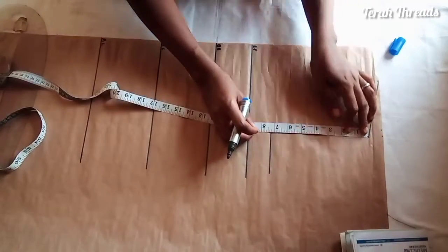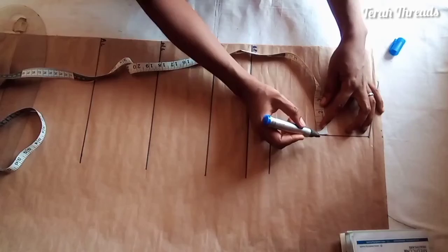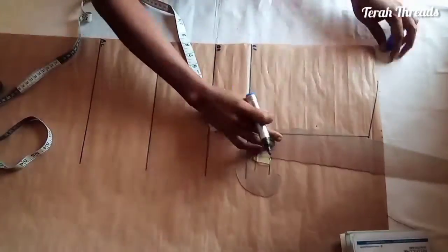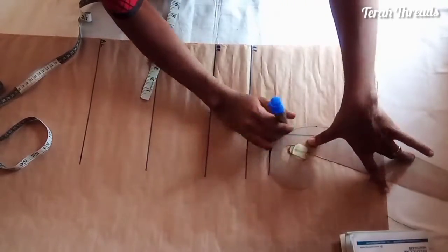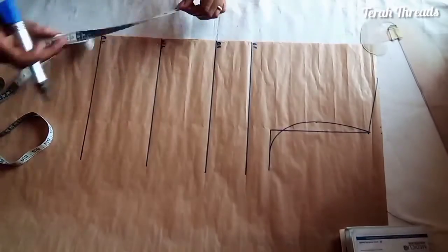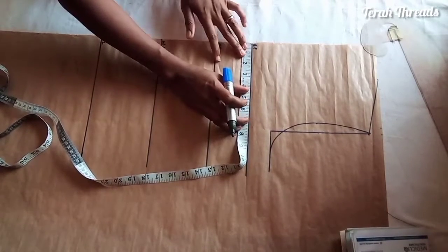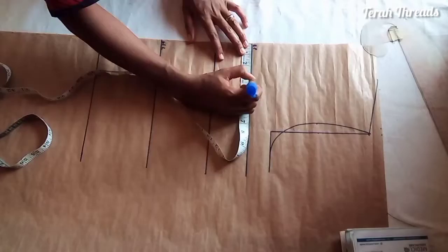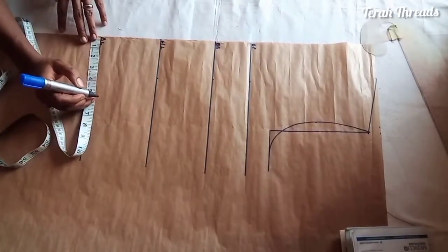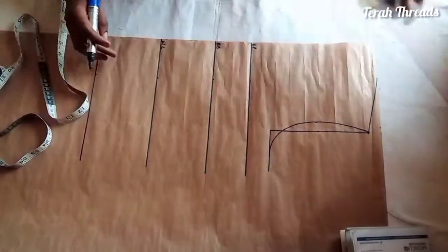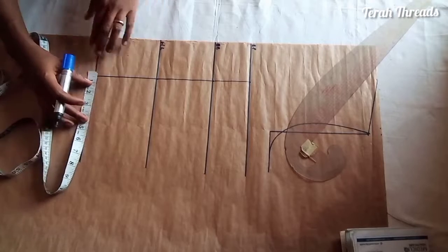I'll go ahead and create the armhole. I have series of videos about this. Find the midpoint and go in by three-quarter inch to create the armhole curve. Then I'll fix in my nipple to nipple distance divided by two. My seven divided by two is 3.5 for the dart placement.